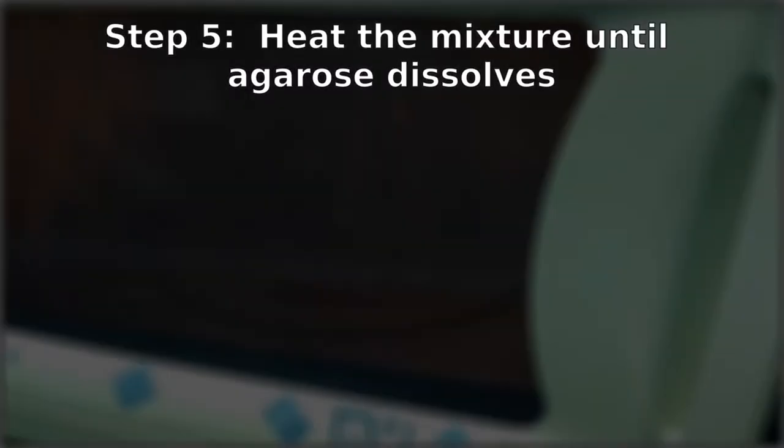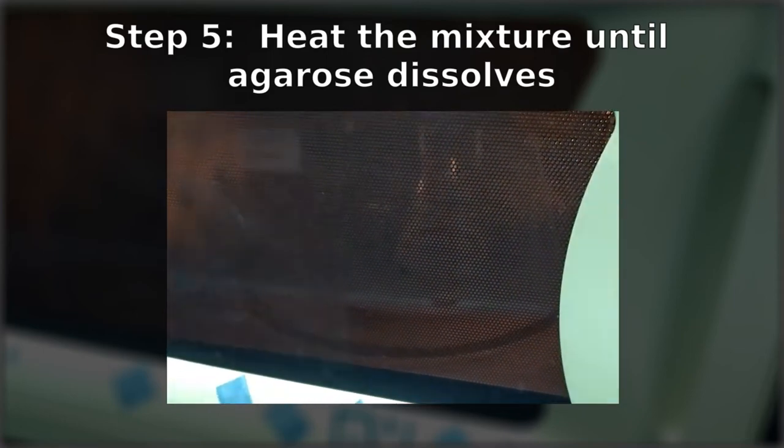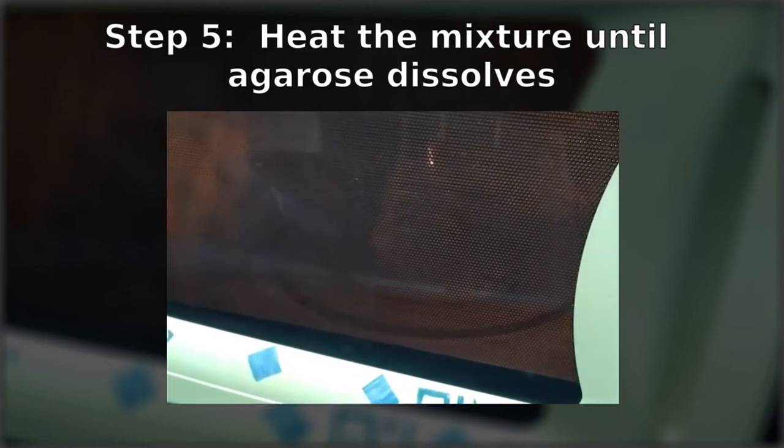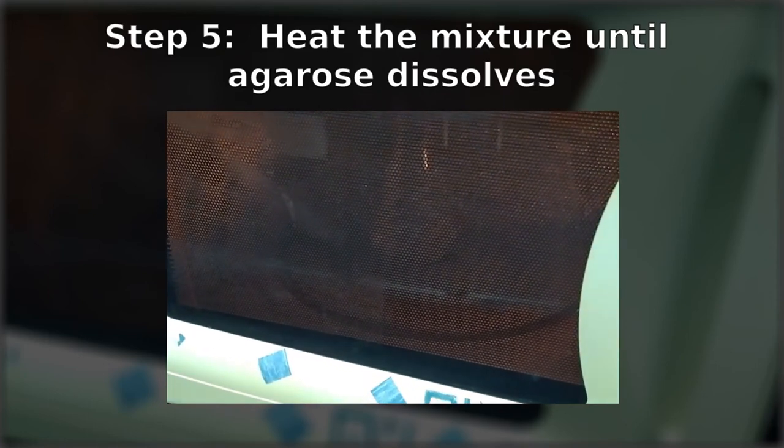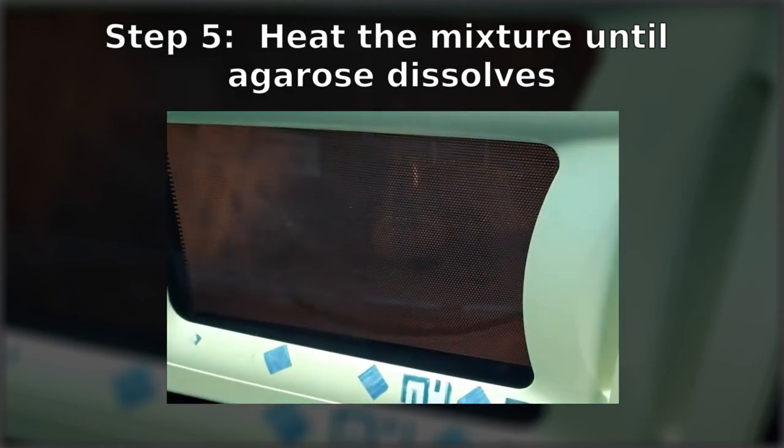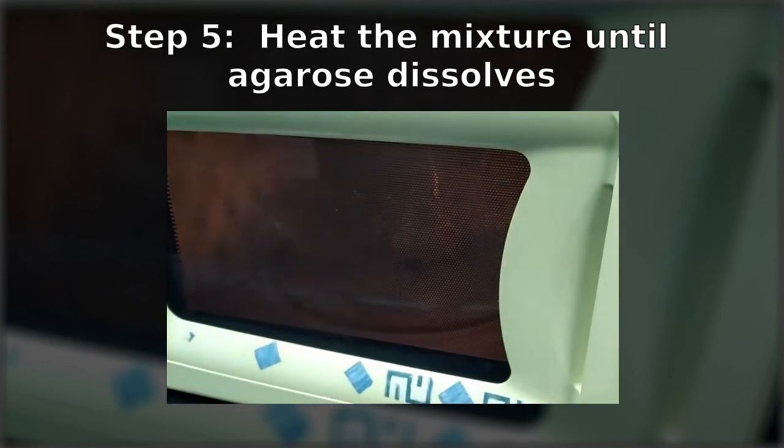Now, agarose does not dissolve in the buffer on its own. It has to be heated. So, this is where we throw it into the microwave. And depending on the power of the microwave, you're going to set it to either a minute or two. Usually, about a minute is probably enough. You want it to get just hot enough to just before it starts boiling. So, you want to be watching it carefully to make sure it doesn't boil over. As soon as you see it bubbling, stop the microwave.